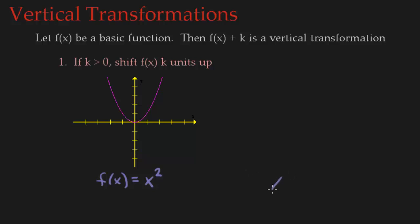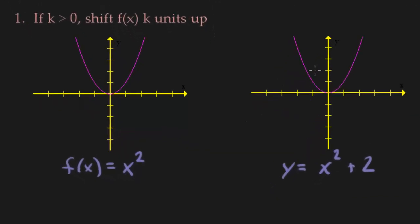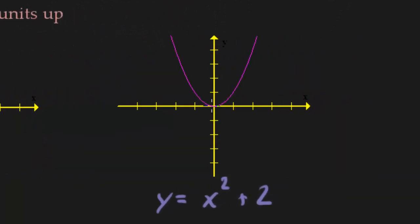Written out, that would look like y equals x squared plus 2. Let's go ahead and graph that. So let's take every point on my function and shift it up 2 units. So I have this point right here, right there. We'll shift that up 2 units.